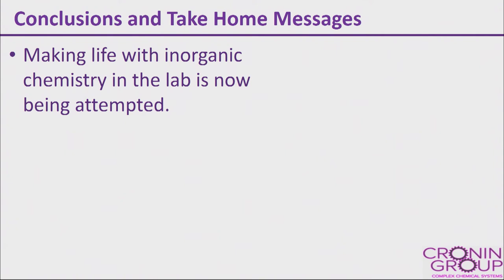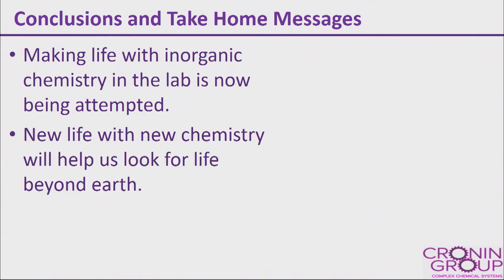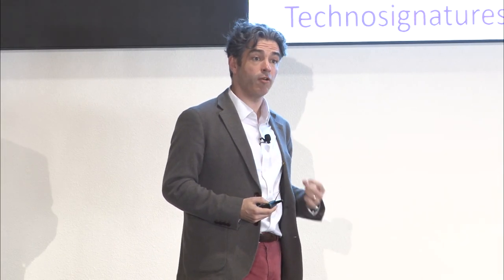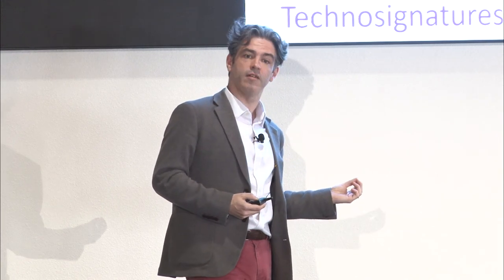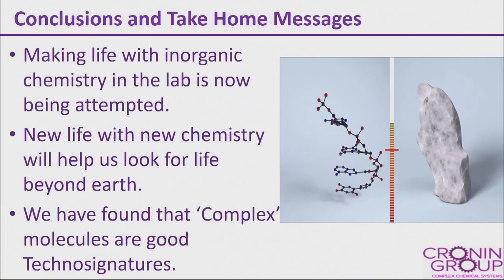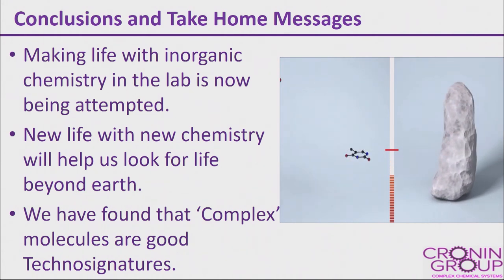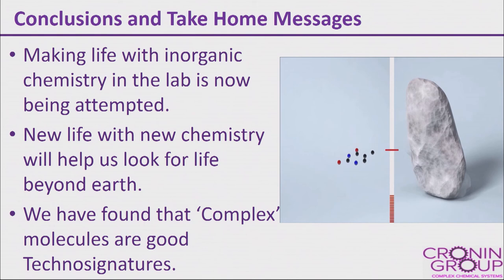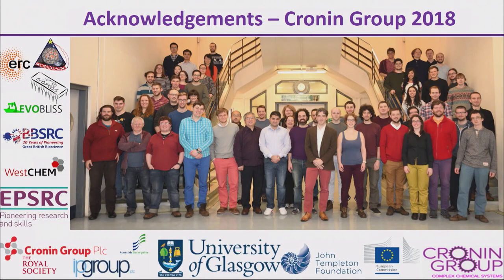What are the conclusions and take-home messages? Making life with organic chemistry in the lab is now being attempted. A new chemistry will help us look beyond Earth — why do we have to be constrained to water? Venus has probably got some interesting dynamics, but the pressure and temperature are different and we simply don't know what the chemistry looks like, because we have no chemists on Venus. We found that complex molecules are good technosignatures, not just in the laboratory but remotely. I'd love to develop this in my lab and then take that out, and maybe even think about how it might work with astronomical data. How much do you have to erode your rock before it's no longer a statue, and your DNA before it's no longer DNA — and threshold it? That's what we're trying to do. This is the team that did it in Glasgow — thanks very much.